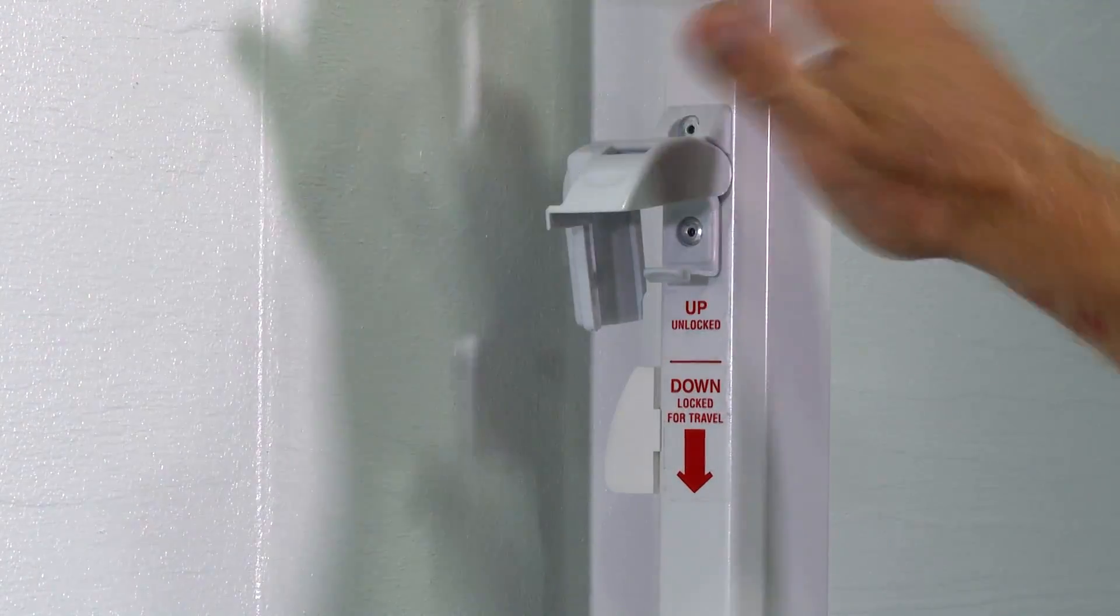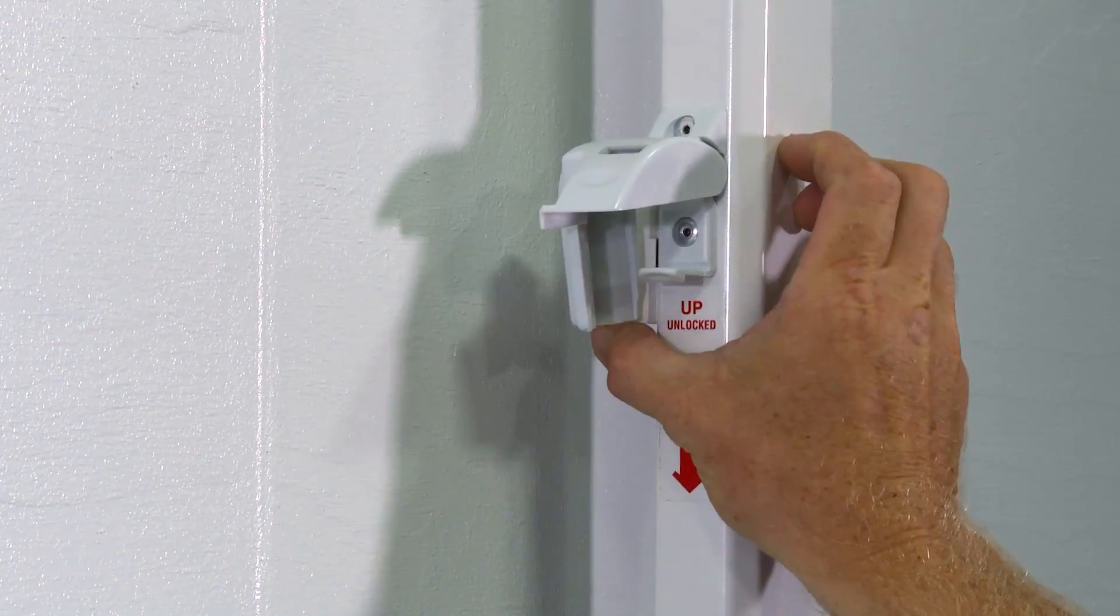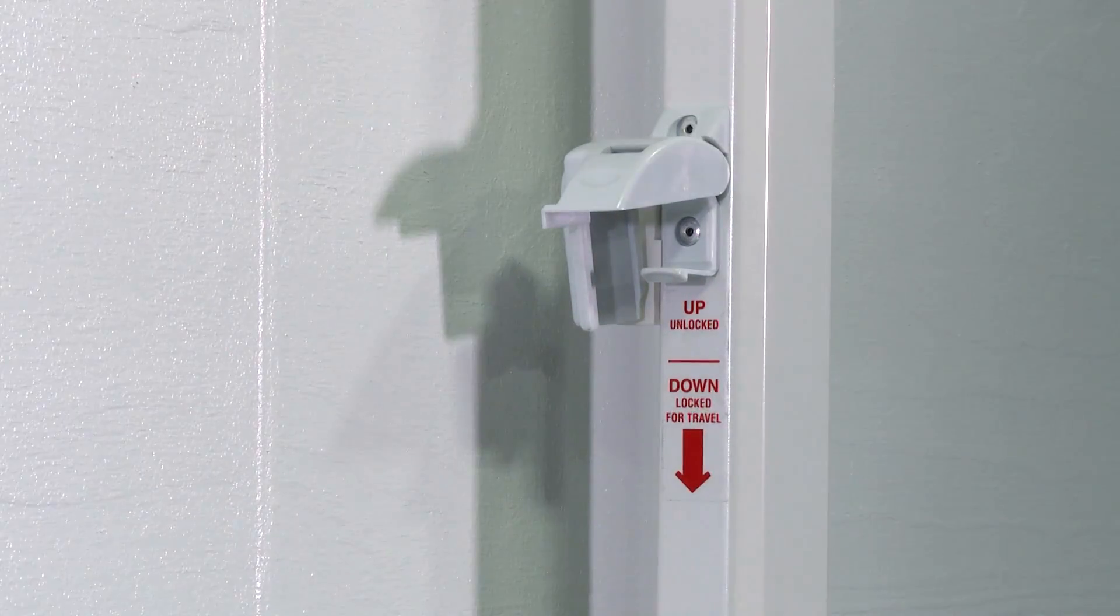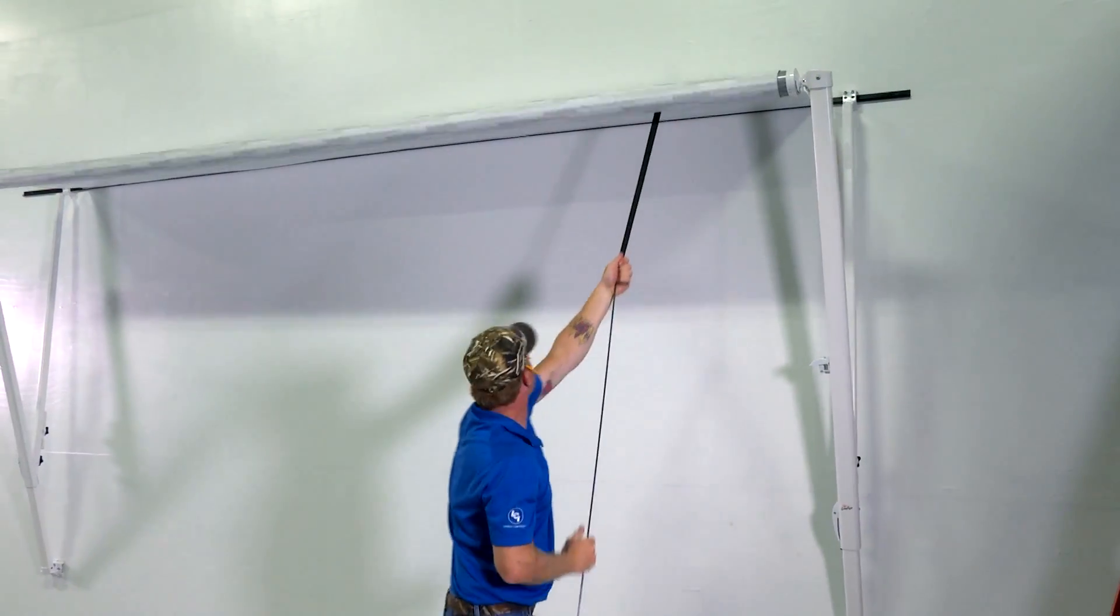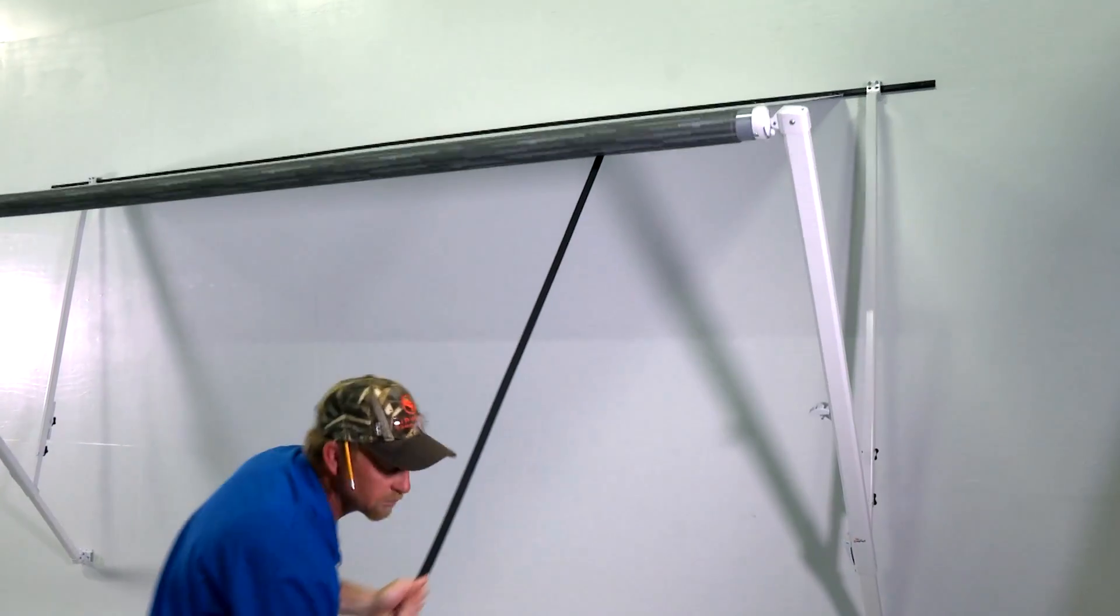Before rolling the awning out, release the travel lock on the awning arm by pushing up on this lever. Release the cam lock above, then roll the awning out to its full extended position.